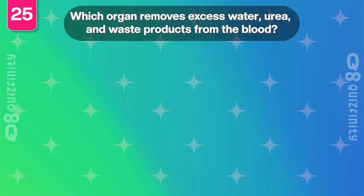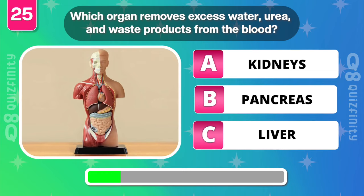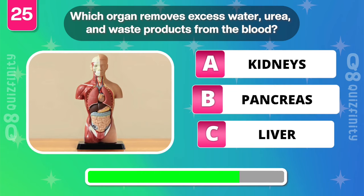Which organ removes excess water, urea, and waste products from the blood? Kidneys.